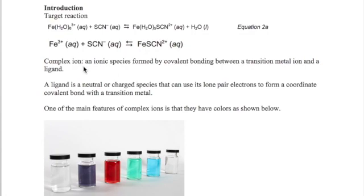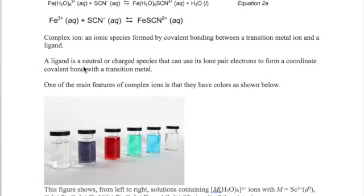Let's discuss a bit about complex ions. These are ionic species formed by covalent bonding between a transition metal ion and a ligand, which can donate a lone pair of electrons. Transition metal elements have their valence electrons in the d-orbitals, and the energy difference between the d-orbitals often allows photons in the visible range to be absorbed. This means that complex ions have a variety of colors as shown here.